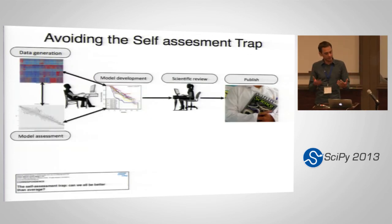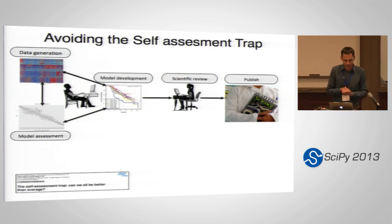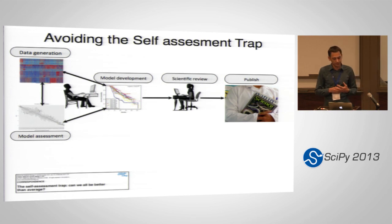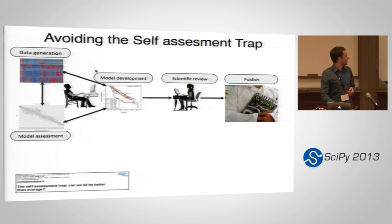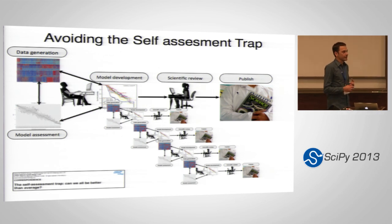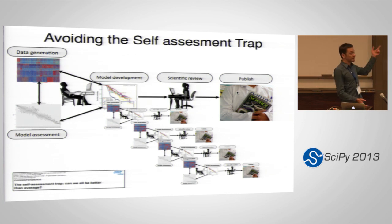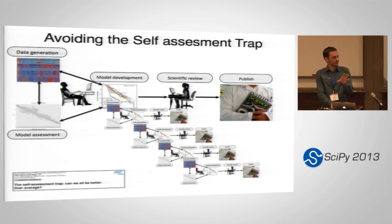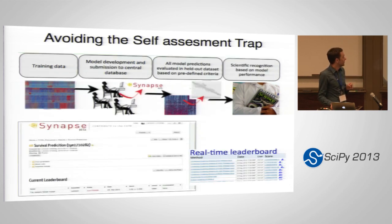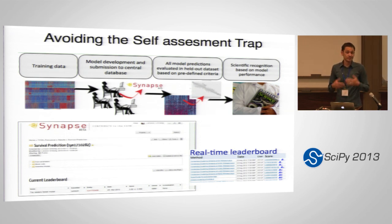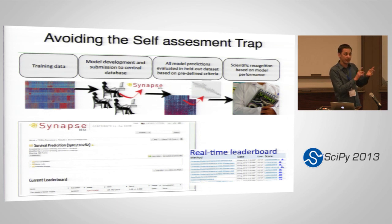Another part used in the TCGA collaboration is avoiding the self-assessment trap. The way most machine learning research is done: a researcher uses data, builds a model, assesses how well their model does, and if it does well, publishes it. As a result, everybody's paper claims the best method because everybody is assessing themselves. By moving assessment out of the researcher into a centralized location, you can have everybody compared on the exact same methodology. This is something we're pushing hard at Sage — running challenges where we provide the data and the goal, and everybody submits their methodologies along with source code and actual results. You get a real-time leaderboard and a competition.